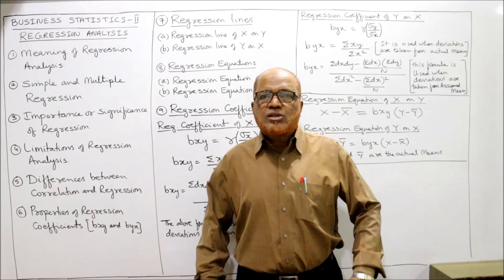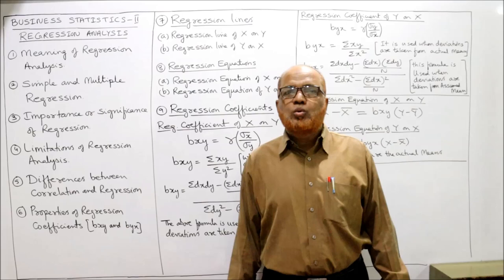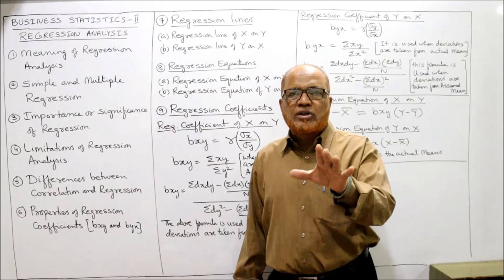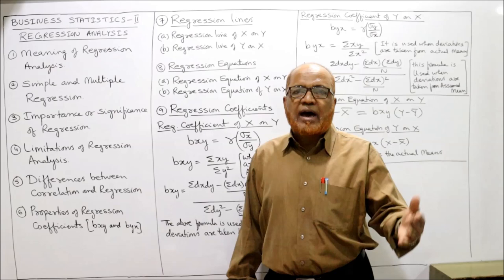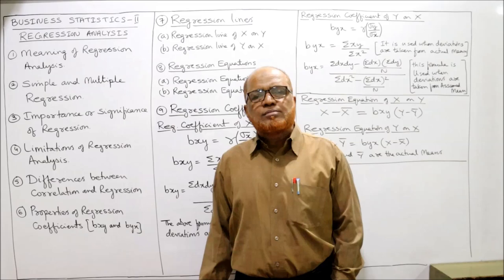There is no cause-and-effect relationship in correlation analysis, but in regression analysis we apply cause-and-effect relationship between two or more variables. Simply put, regression analysis is a statistical technique of expressing the functional relationship between two variables so that we can predict one variable for a given value of the other variable. That is the main purpose.